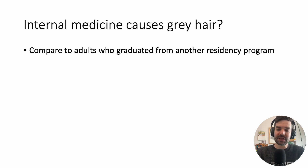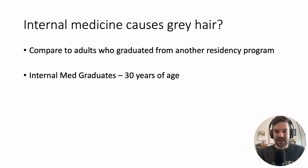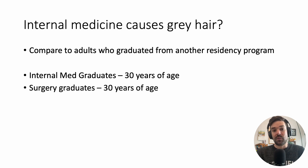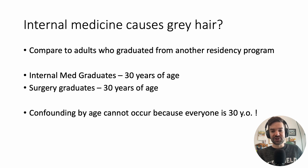Going back to the original example — does internal medicine cause gray hair? We could compare two groups: those who graduated from internal medicine versus some other residency program. If the average age of an internal medicine graduate is 30 years, and we find a cohort of surgery graduates who are also all 30 years of age, then there won't be confounding by age because the age distribution is exactly the same in both groups.